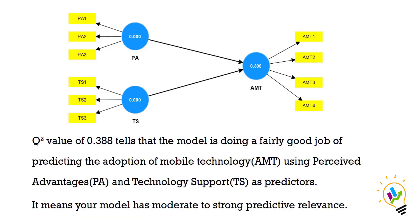A Q² value of 0.388 tells us that the model is doing a fairly good job of predicting the adoption of mobile technology using perceived advantages and technological support as predictors. This means the model has moderate to strong predictive relevance. Thank you.